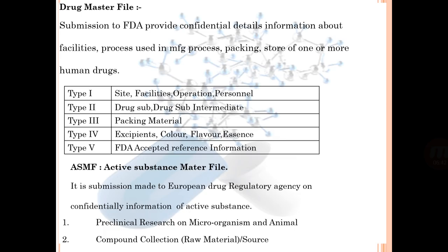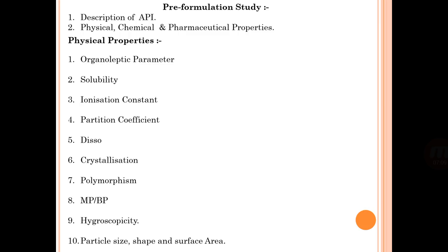The ASMF — Active Substance Master File — is a submission made to the European Drug Regulatory Agency providing confidential information about the active substance. A DMF (Drug Master File) is maintained for the US, and an ASMF for Europe. Pre-clinical research is conducted on microorganisms, animals, and involves compound collection, raw materials, and sources.